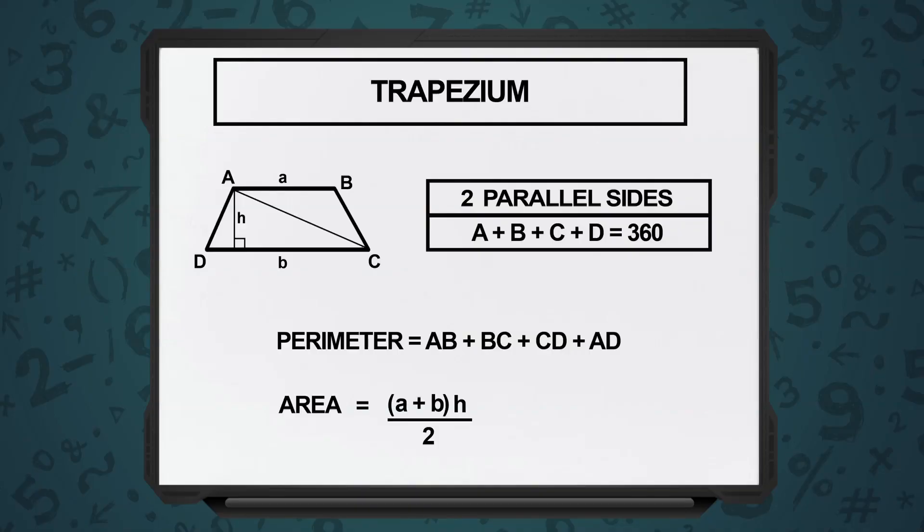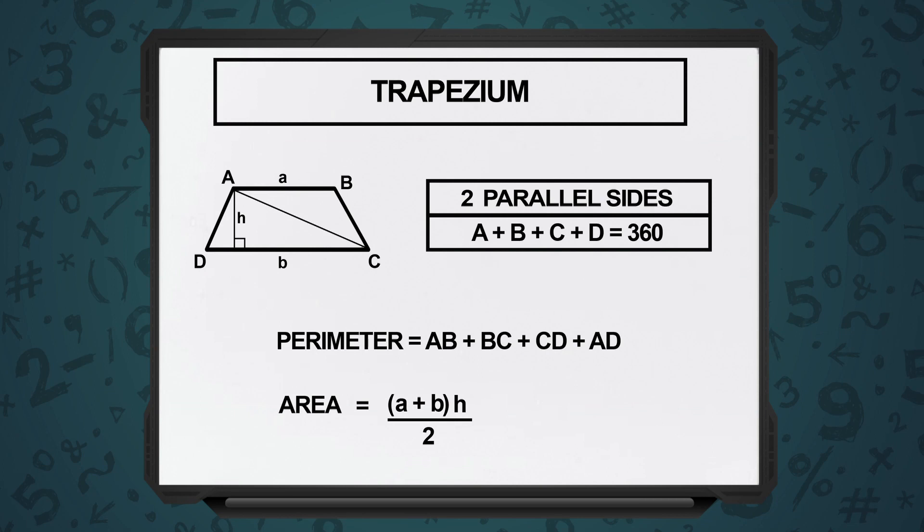If you take this trapezium, you have the two parallel sides with lengths A and B. You take one diagonal and suddenly you have split the trapezium into two triangles, one with base A and the other one with base B. The height H will be the same in both cases.